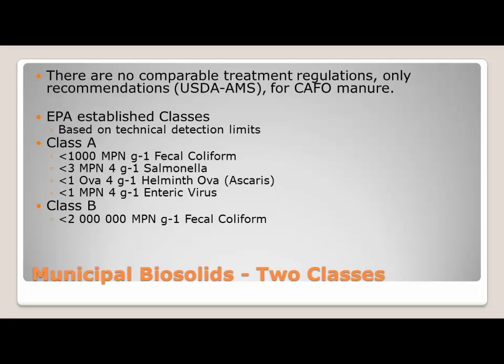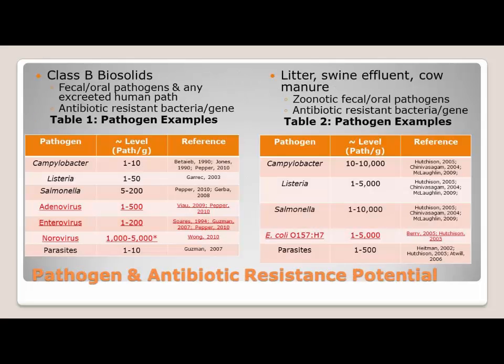Manures are going to be pretty varied — you can have chicken litter, swine effluent, cow manure, dairy manure, cattle manure, turkey, horse, goat. There's a lot of different manures out there. When you look at the overall breakdown of the microbiology and the pathogens associated with manures, for the most part: if you can defecate it, it's pretty much going to be there. From the human and municipal standpoint, that includes influenza, rhinovirus, a bunch of different viruses — and that's the key difference between biosolids and manure.